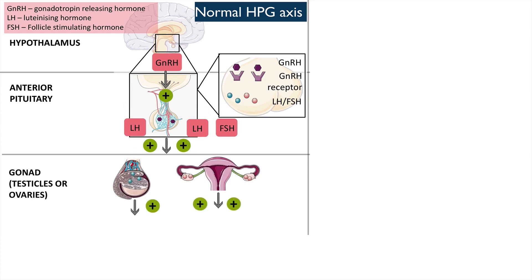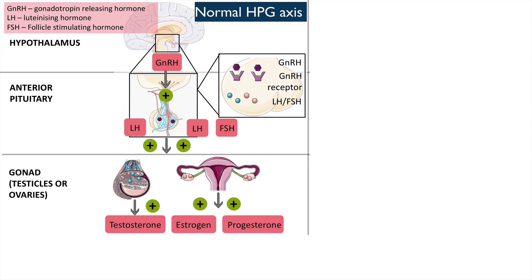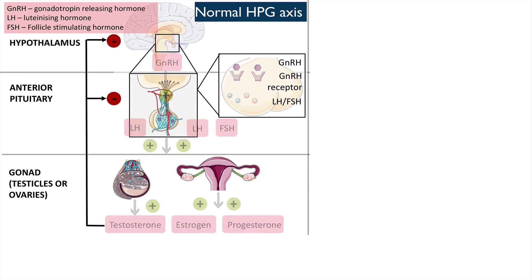These follicles release sex hormones, such as estrogen and testosterone. These hormones then go on to have negative effects on the hypothalamus and the pituitary gland.